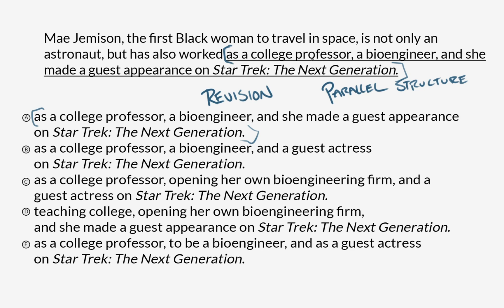Let me explain by analyzing the sentence. 'A college professor' — that's a noun phrase. 'A bioengineer' — that's a noun. 'And she made a guest appearance on Star Trek' — that's its own entire clause. We've got a subject, a verb, a direct object, and a long prepositional phrase.